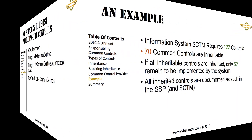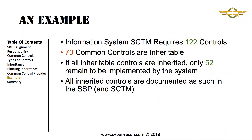In this example, an Information System's Security Control Traceability Matrix requires 122 controls to be implemented. 70 of these controls are inheritable. If the system owner inherits all 70 controls, they will be required to implement 52 controls at the Information System level. All inherited controls are documented as such in the SSP and the SCTM.